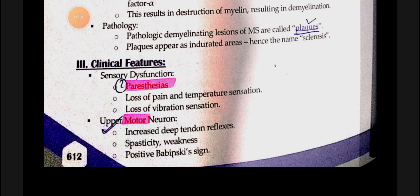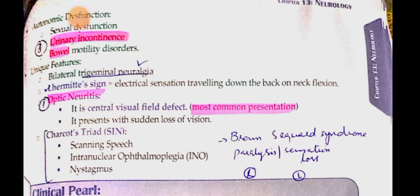Unique features include bilateral trigeminal neuralgia. Lhermitte's sign — important for MCQs: when the patient's neck is flexed, they feel an electric shock sensation down the back. This electrical sensation down the back on neck flexion is called Lhermitte's sign. When the optic nerve is involved, optic neuritis occurs — the patient experiences sudden loss of vision, which is the most common presentation of multiple sclerosis. Central visual field defect — that is optic neuritis.